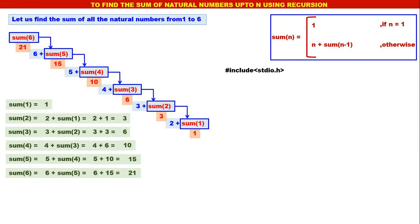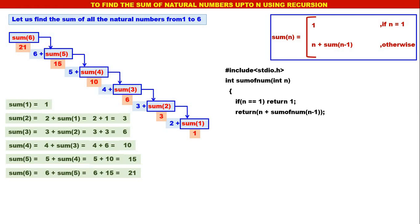Now we shall write the function for this recursive program to find the sum of natural numbers up to n. The function is: int sumOfNum(int n) — with only one parameter. If n is equal to 1, return 1; otherwise, return n plus sumOfNum(n minus 1). That is all the function. As I said, recursive functions are very small, very cute, very simple.